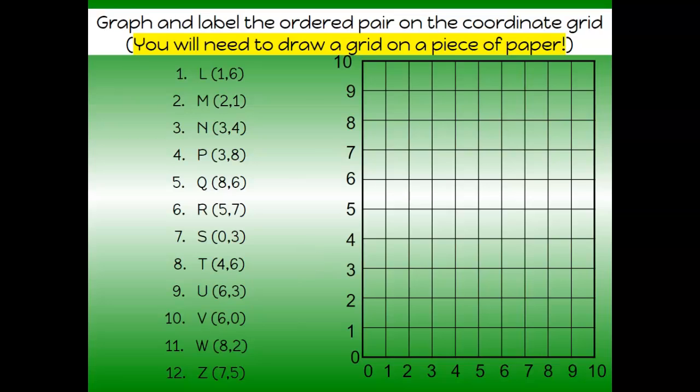All right, now you get to practice. So on a piece of paper, I want you to draw a grid. If you use a piece of notebook paper, you can just draw the vertical line, so your y-axis, which will help you. And then I want you to pause the video here. You're going to plot the ordered pairs on your paper that you have next to you. So pause the video, plot the ordered pairs. Make sure you label them. Again, if you do L and you plot the point, make sure you write L next to it. Okay, so pause the video.